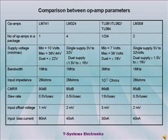This slide shows a comparison between different OPAMPs. The 741 OPAMP has an NPN input stage with a single OPAMP in the package. The 324 and 358 OPAMPs have a PNP input stage, and the TL081 has a JFET input stage. If the application requires a single OPAMP, you can use the 741. If more than one OPAMP is needed, the 324 IC has 4 OPAMPs in a single package, and the 358 has 2 OPAMPs in a single package.